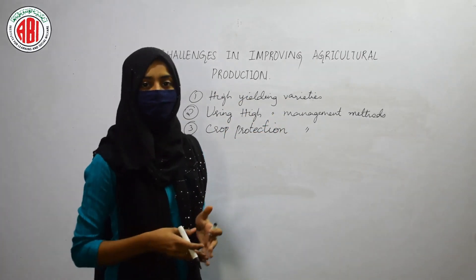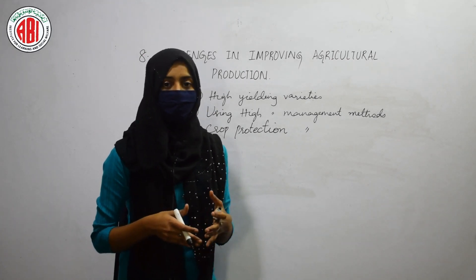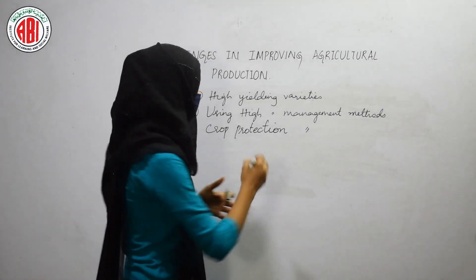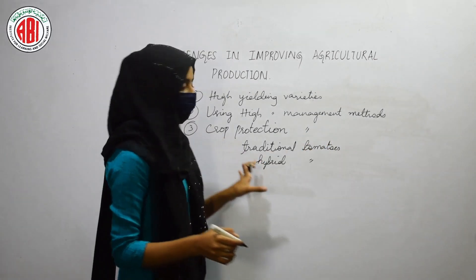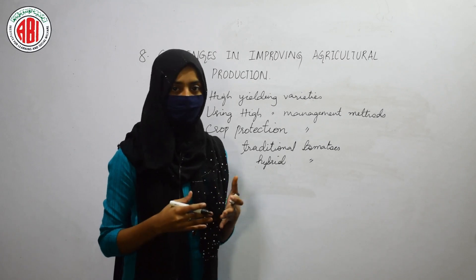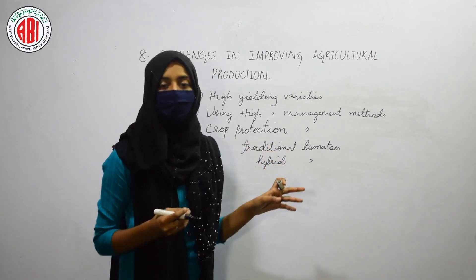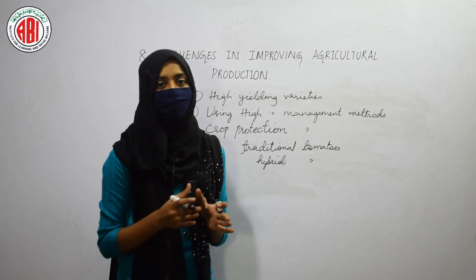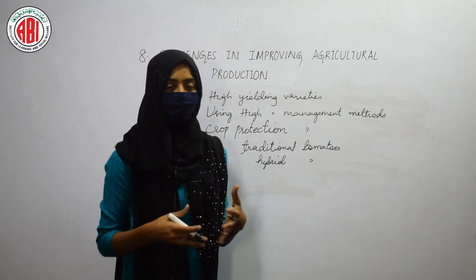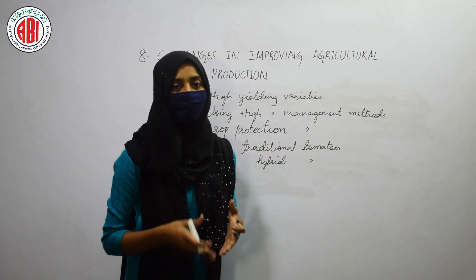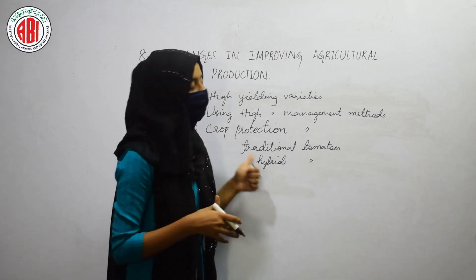Let us talk about the first one — high yielding varieties. When we go to the market we usually see different kinds of tomatoes in the vegetable shop. Some tomatoes are traditional or local ones and some are hybrid varieties. The hybrid ones show more desirable characteristics when compared to the traditional ones. The storage capacity of traditional tomatoes is very less compared to hybrid tomatoes, which can be stored for a longer period of time.